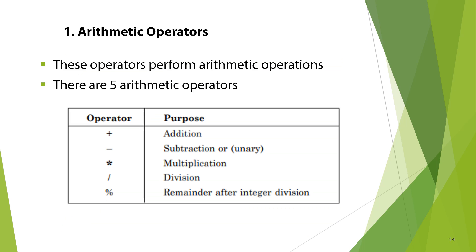The first type is arithmetic operators, which perform arithmetic operations. There are five arithmetic operators: plus for addition, minus for subtraction or unary negation, star for multiplication, slash for division, and percent sign as the mod operator which gives the remainder after integer division.